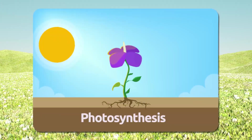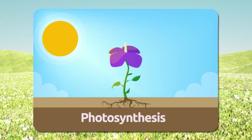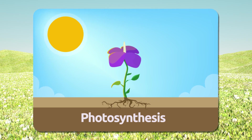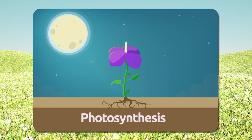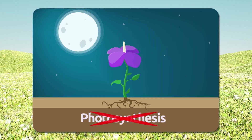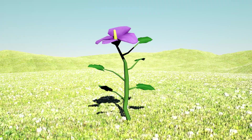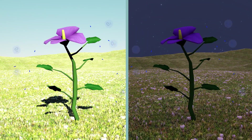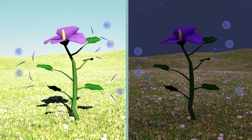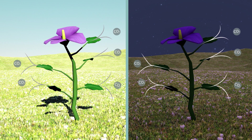Keep in mind that photosynthesis happens only during the day because plants need sunlight. Don't confuse respiration with photosynthesis. Plants breathe during day and night — they absorb oxygen and release carbon dioxide.